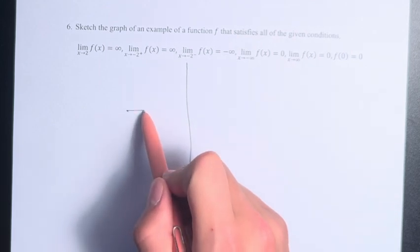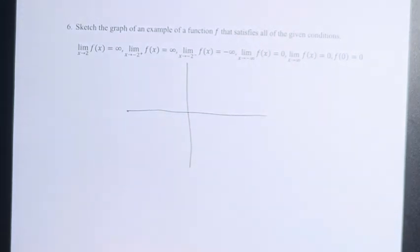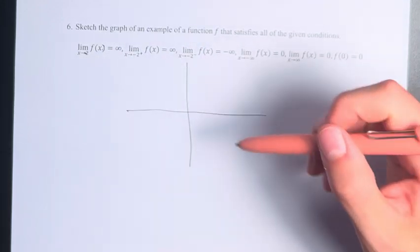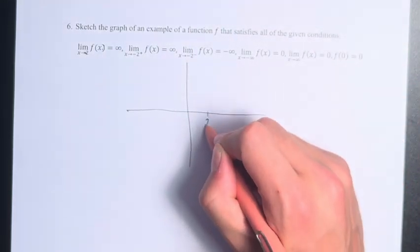So drawing a general x-y plane here, let's go one step at a time. As x approaches 2, the value of the function approaches infinity. So if x equals 2 is right here,